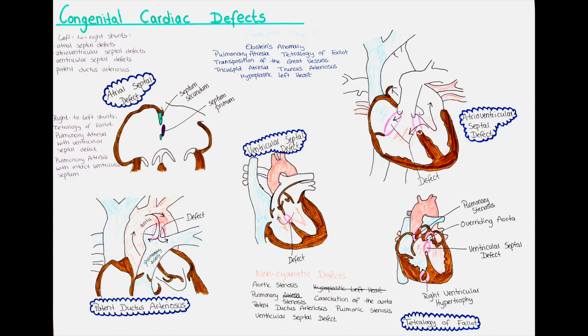We have talked about the fetal circulation before, but I will mention again the structures that differentiate the fetal circulation from ours. There are two structures in the fetal heart that allow the blood to bypass the lungs: the foramen ovale, located between the right and left atrium, and the ductus arteriosus, which connects the aorta and pulmonary artery. After birth, when the lungs have to function, they close and stop the circulation of the mixed blood.